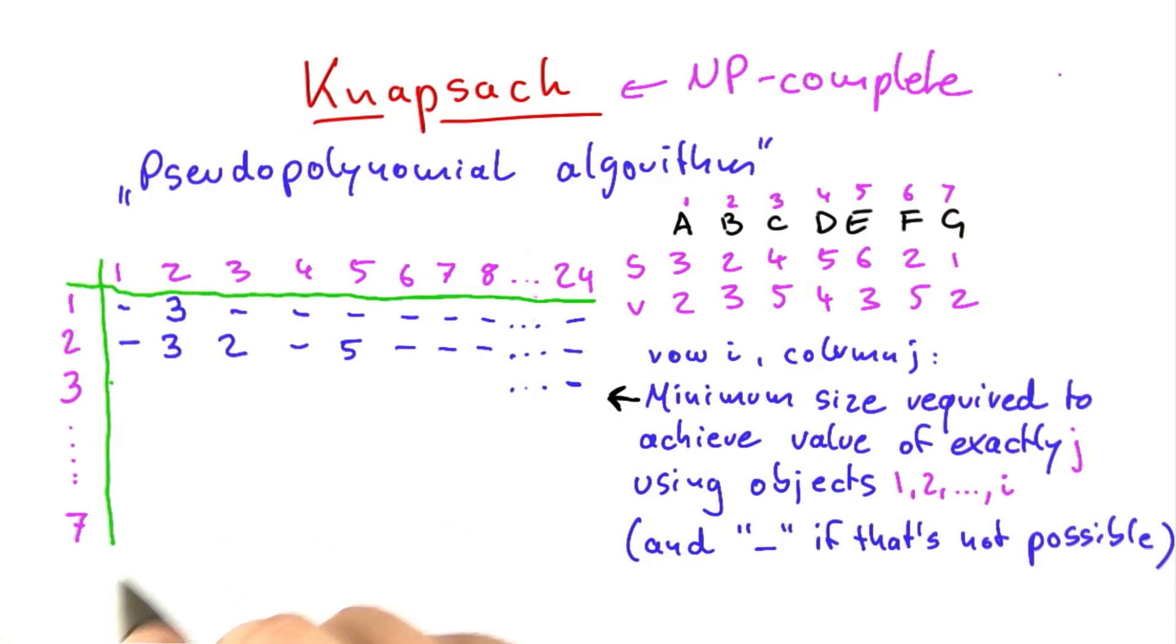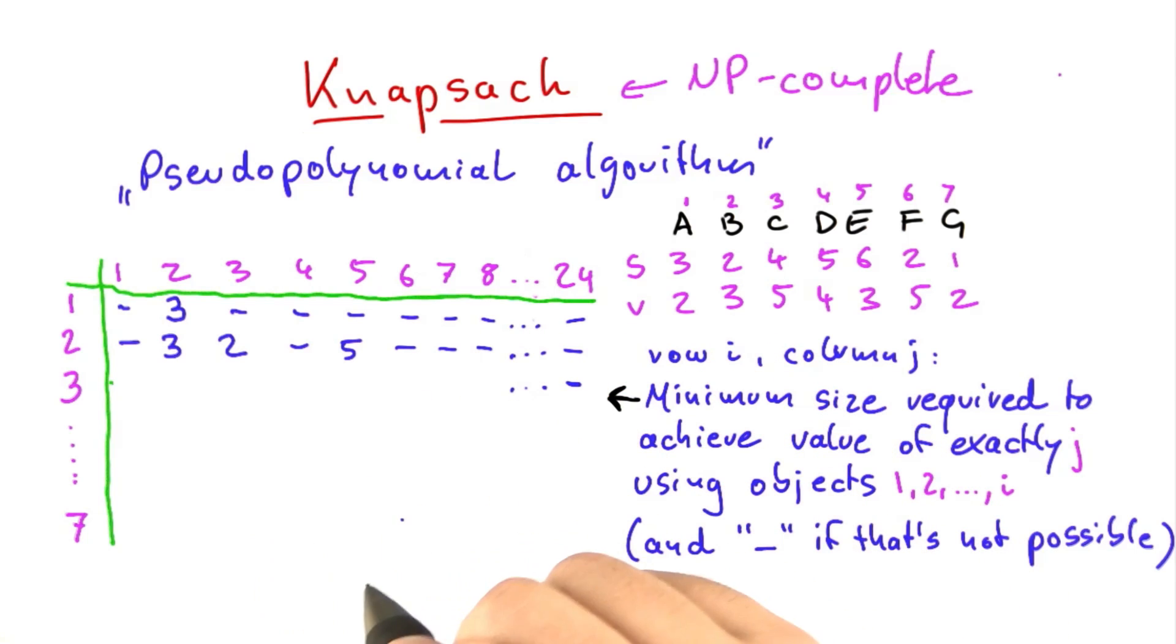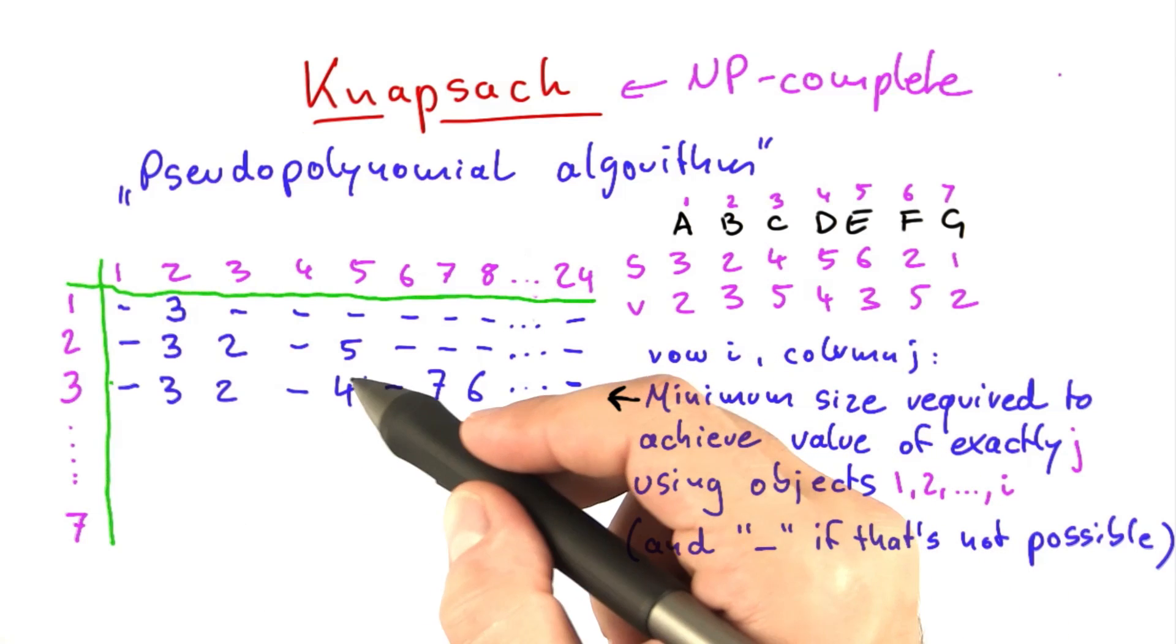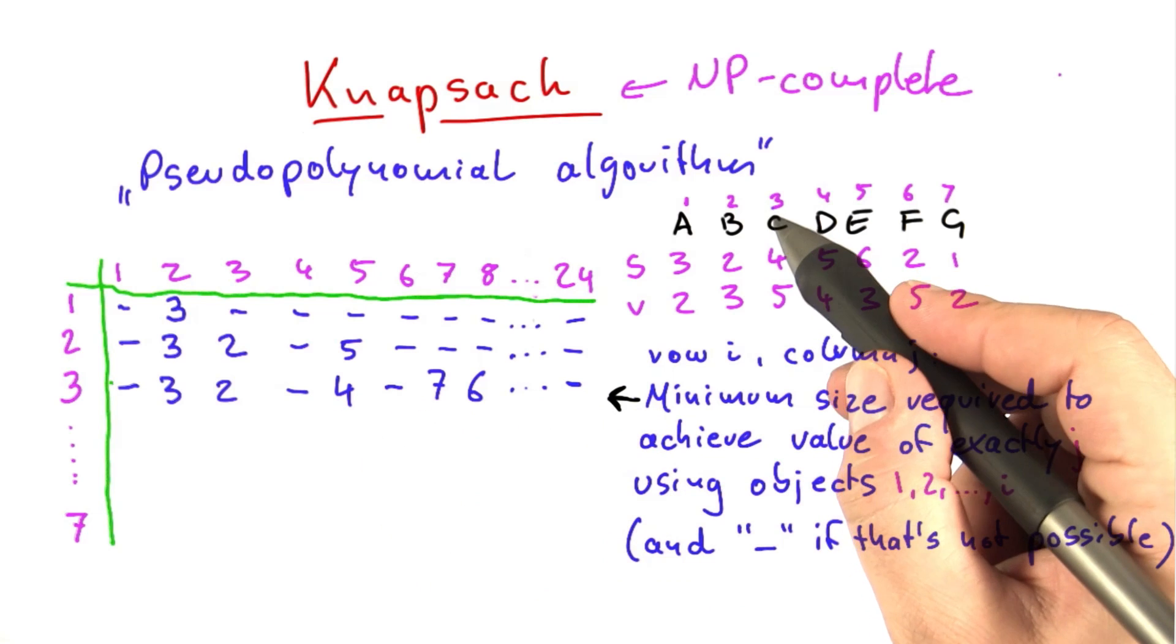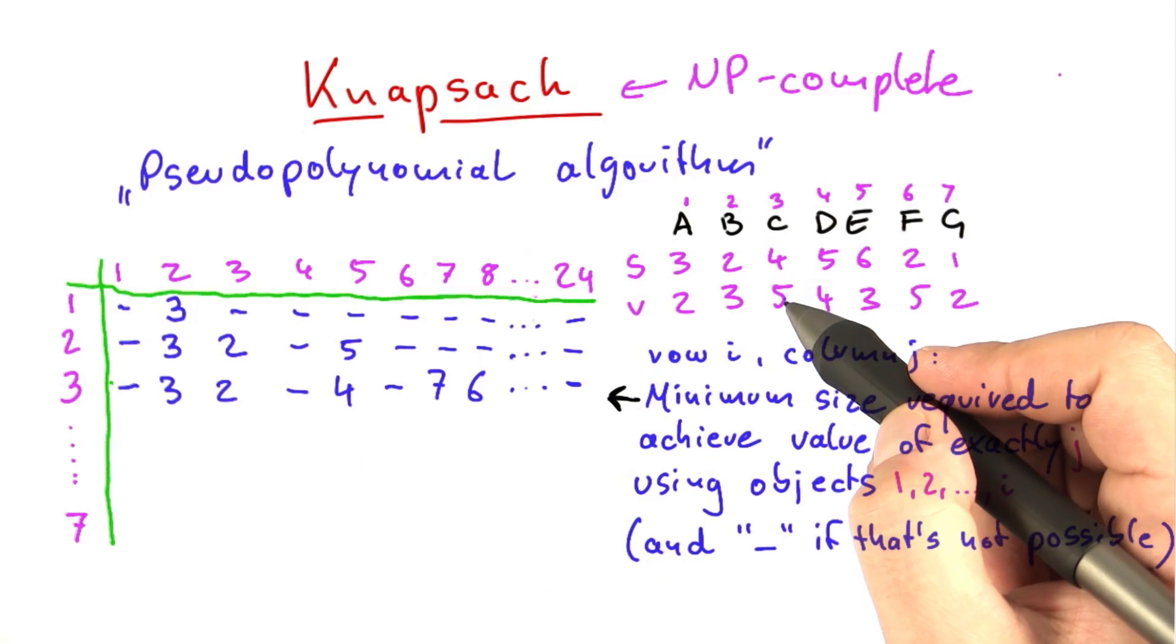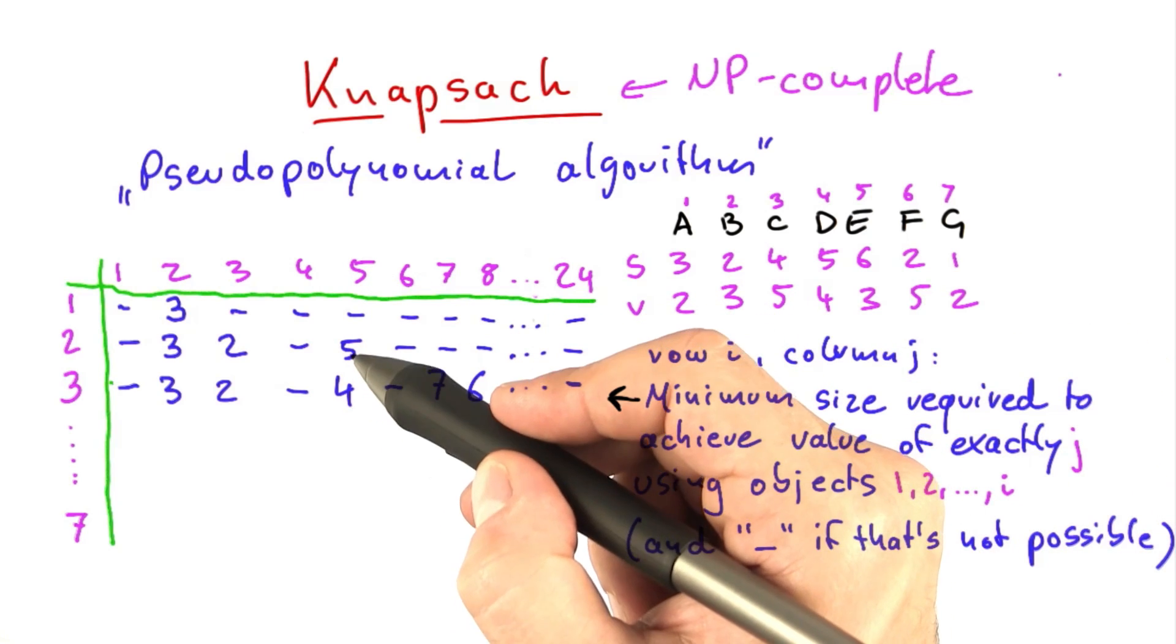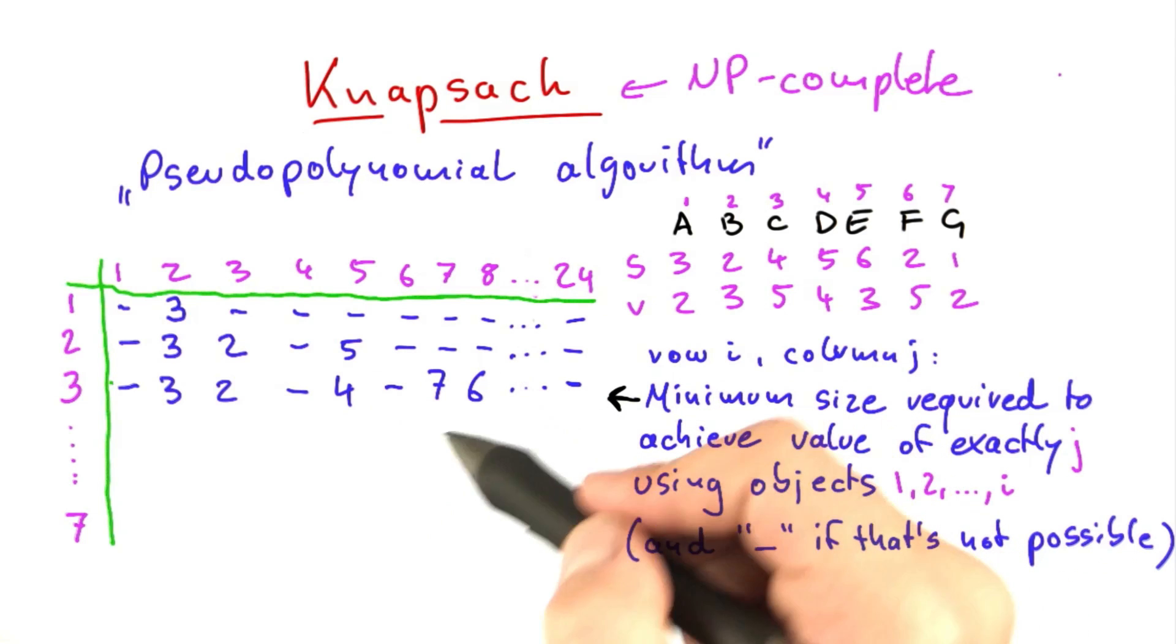And I'll fill out one more row here for you. I'm not going to show you the part that goes beyond 8 though because that'll not be important for what I'm about to explain. The interesting part here is this one here because object number 3 has size 4 and value 5, which means that we can achieve value 5 actually by putting in this object instead of using a and b as we did in the row before.